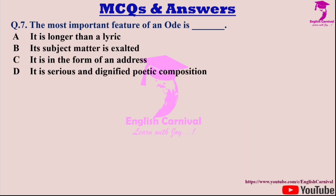Question seven: The most important feature of an ode is — dash. Options are A: It is longer than a lyric; B: Its subject matter is exalted; C: It is in the form of an address; and D: It is a serious and dignified poetic composition. Correct answer is C — it is in the form of an address.